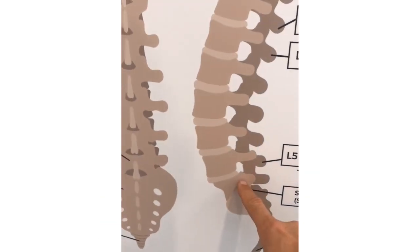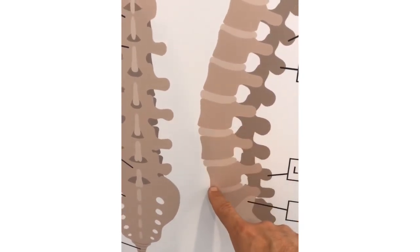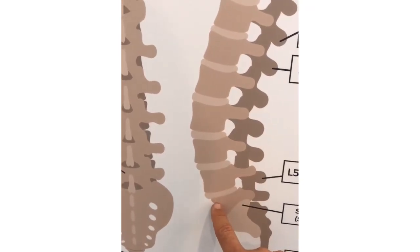If a vertebrae slips forward one in front of the other, that's called an anterior listhesis, meaning the vertebrae has slipped forward in relation to the one below it.